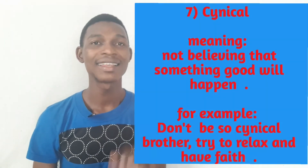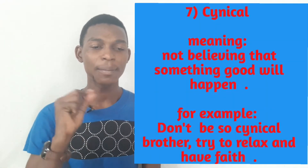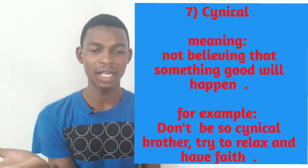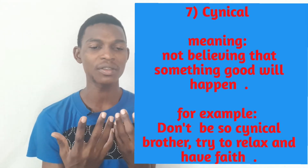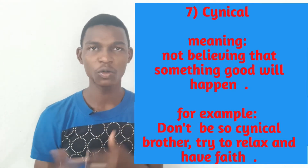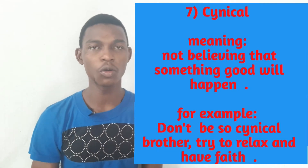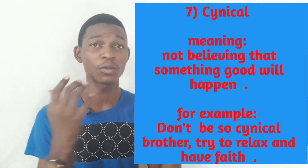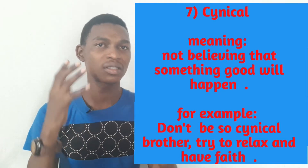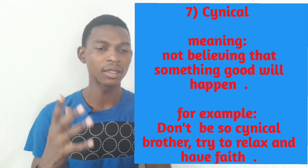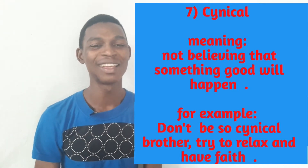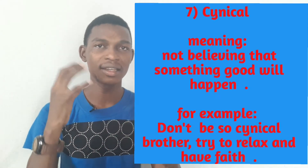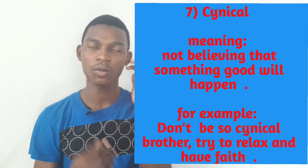Number seven is cynical. Cynical means not believing that something good will happen. If someone is cynical, it means this person does not believe that something good will happen. For example, don't be so cynical, brother — try to relax and have faith. Just believe that something good will happen. Cynical means not believing something good will happen; it is a negative adjective to describe personality.